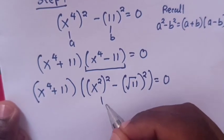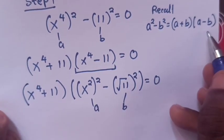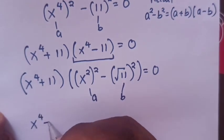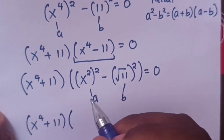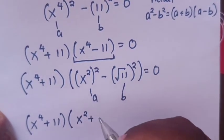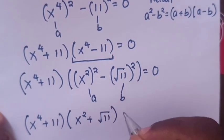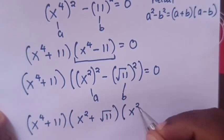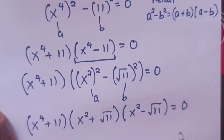Applying the rule again, where x squared is a and square root of 11 is b, we get: (x power 4 plus 11) times (x squared plus square root of 11) times (x squared minus square root of 11) equals 0.